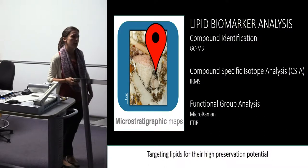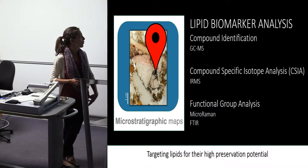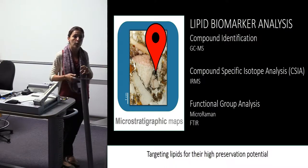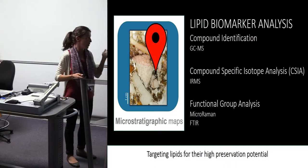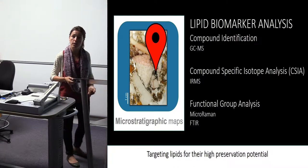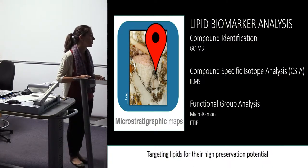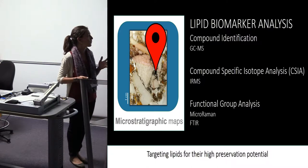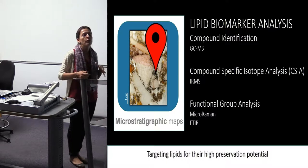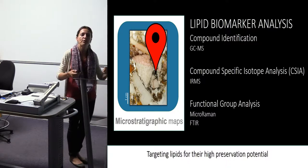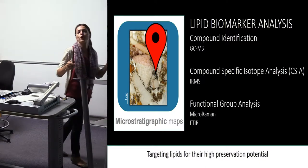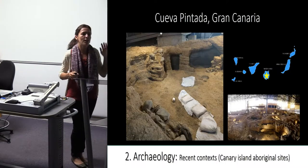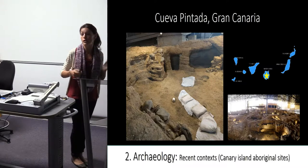For more recent chronologies, these techniques are more frequent for residue analysis. Where we target is to identify compounds — big molecules. We're shooting for molecules rather than elements and minerals. We do this through gas chromatography because we're focusing on lipids, which are hydrophobic and have a higher preservation potential. We also rely on vibrational spectroscopy techniques, which don't give us a whole molecule but complement and reinforce our interpretations, giving us chunks of those molecules.